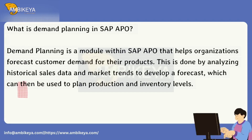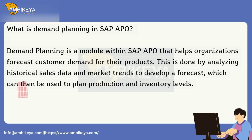What is Demand Planning in SAP APO? Demand Planning is a module within SAP APO that helps organizations forecast customer demand for their products. This is done by analyzing historical sales data and market trends to develop a forecast, which can then be used to plan production and inventory levels.